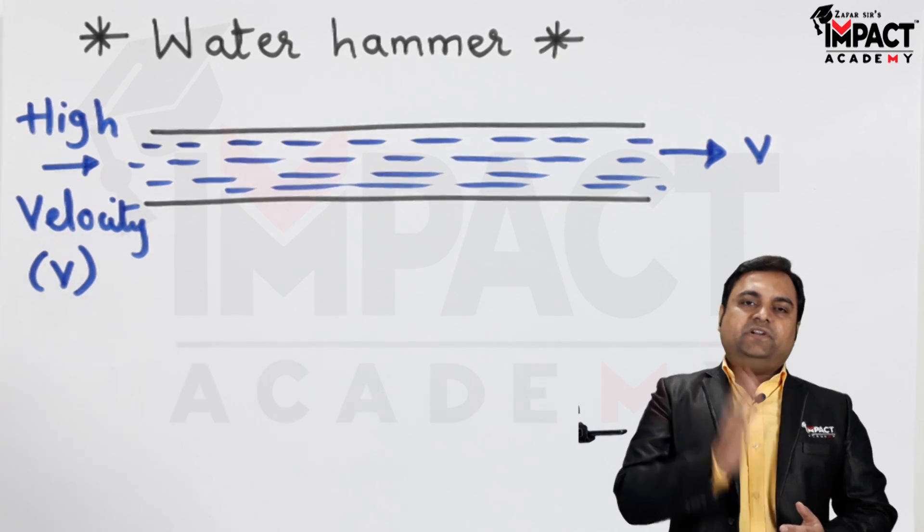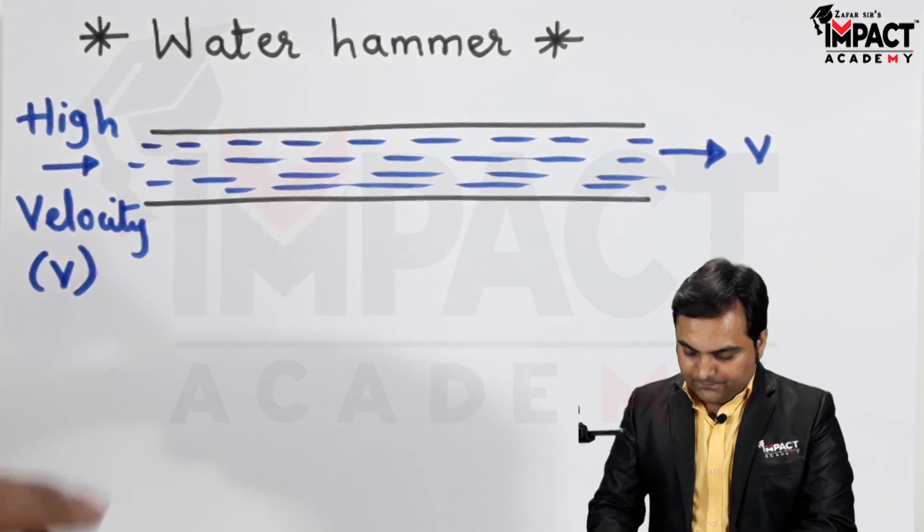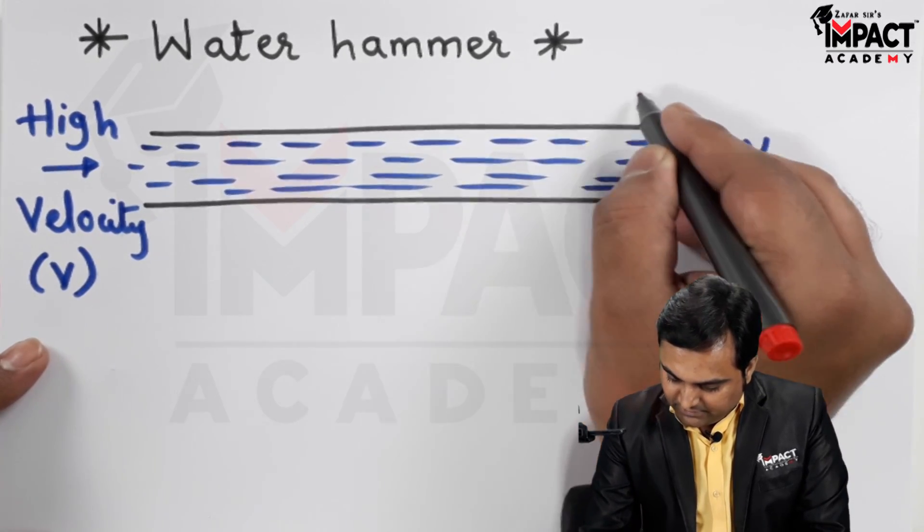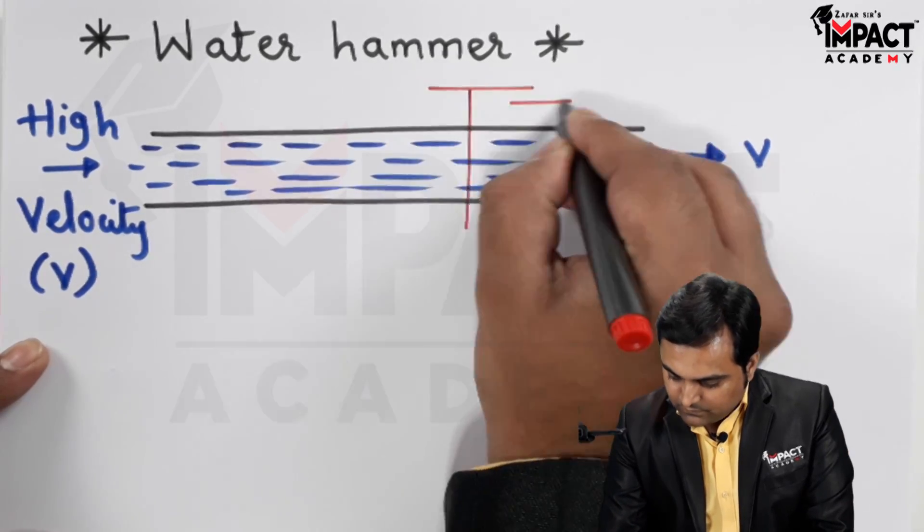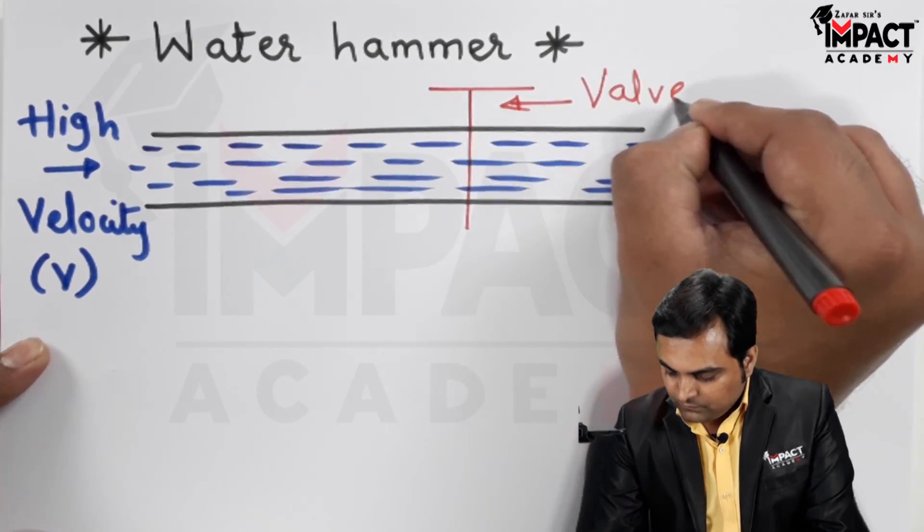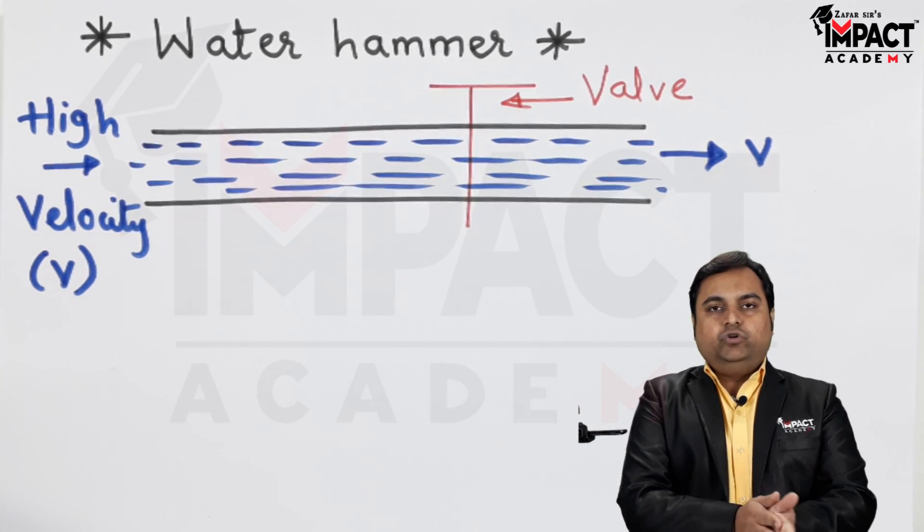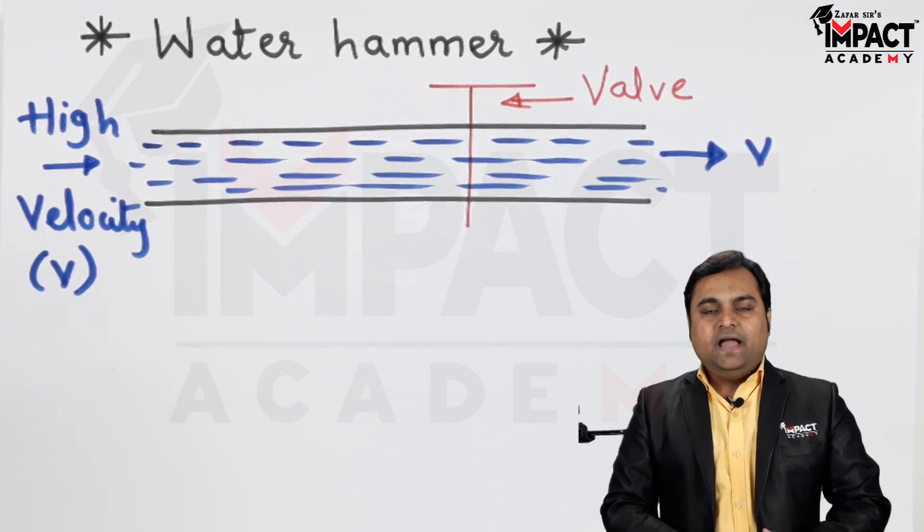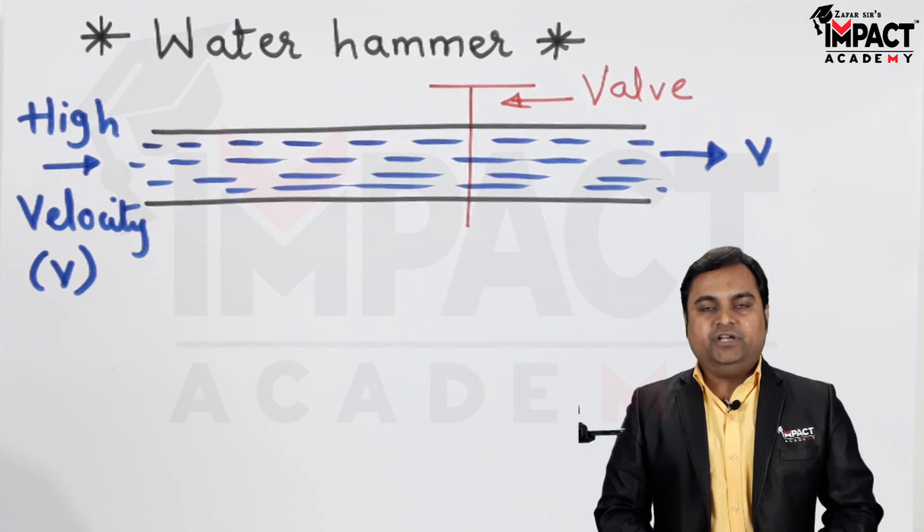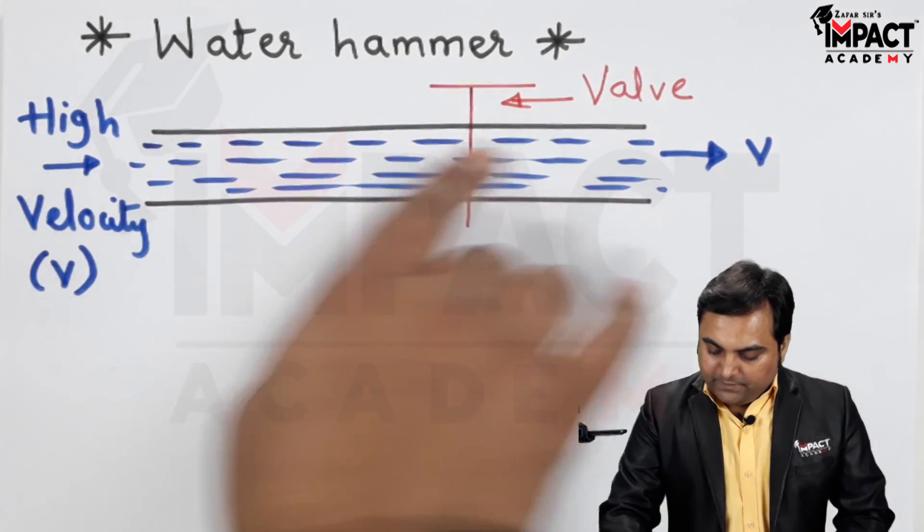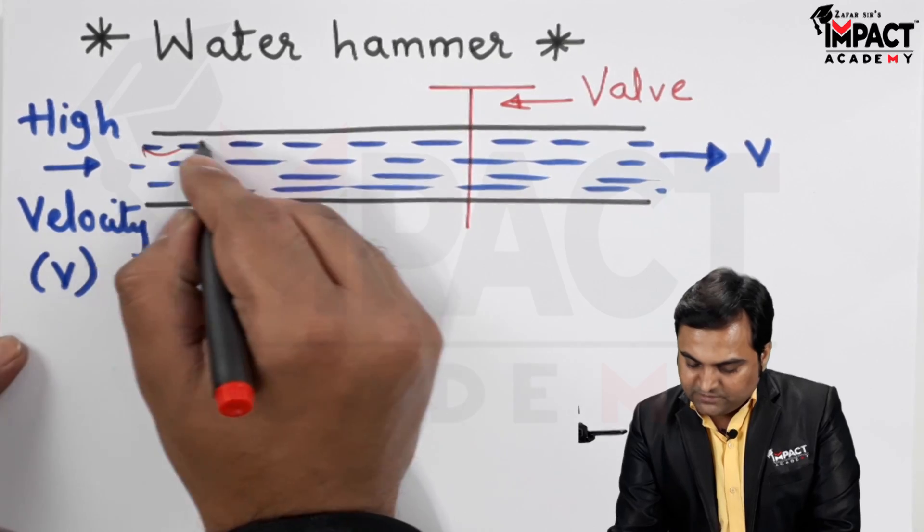And if this water is stopped suddenly by closing a valve, like here if this is stopped suddenly by closing a valve, in that case the kinetic energy would become zero suddenly and that would be converted into huge amount of pressure energy. And that pressure energy would be traveling in the form of waves throughout this pipeline.